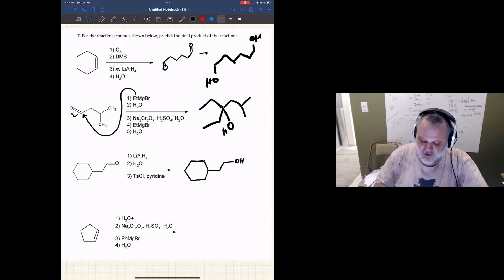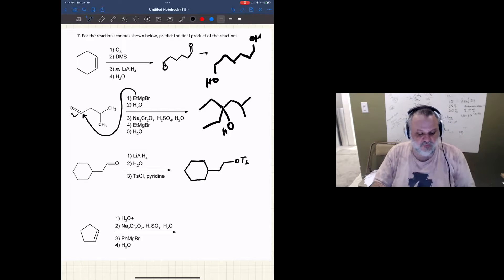And then I'm going to react it with TsCl, with tosylate chloride and pyridine, and so all that does is create the tosylate ester, and so this is the final product.